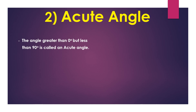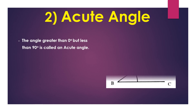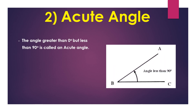The angle greater than zero degrees but less than 90 degrees is called an acute angle. The following figure shows angle ABC as an acute angle because its measure is less than 90 degrees.